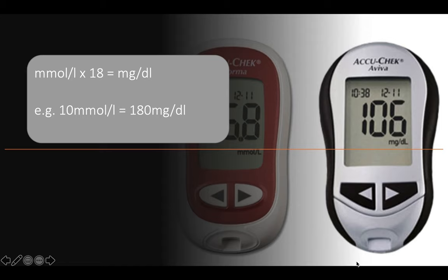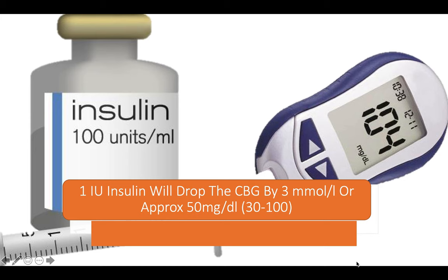People get confused between millimoles and milligrams. If we multiply millimoles by 18, that converts into milligrams per deciliter. For example, 10 mmol/L equates to 180 mg/dL. This is important when converting glucose into insulin requirement per hour. One unit of insulin will drop blood glucose by approximately 3 mmol/L or around 50 mg/dL — the range is 30 to 100 mg/dL.